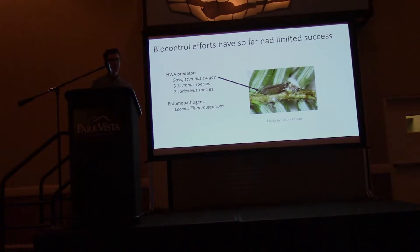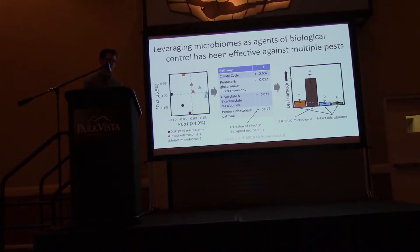One area that hasn't been looked at as much is looking at the microbiome of the hemlock. We know that in human microbiomes, depending on the microbes that live inside your gut, it can really impact how susceptible you are to disease. So we're interested: can the hemlock microbiome be utilized in a way to prevent hemlock woolly adelgid death? And there's reason to think that we can.